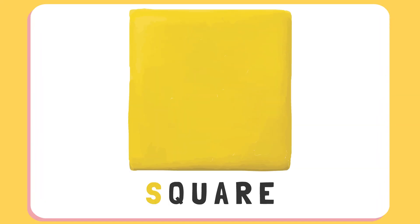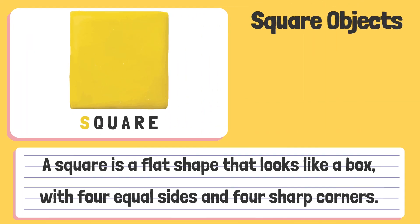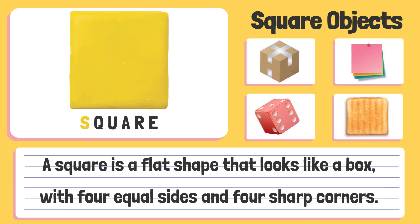Square. A square is a flat shape that looks like a box, with four equal sides and four sharp corners.